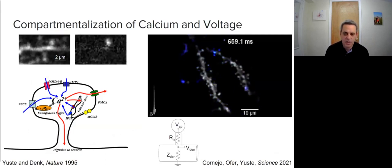In 1995, using calcium imaging, Professor Yuste showed that spines accumulate calcium ions. Recently, the Yuste lab demonstrated in vivo in mouse, using voltage indicators, that spines also isolate voltage.